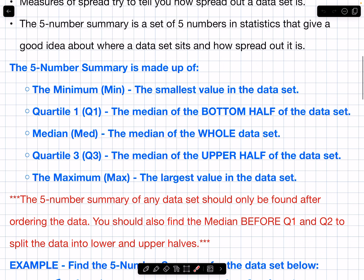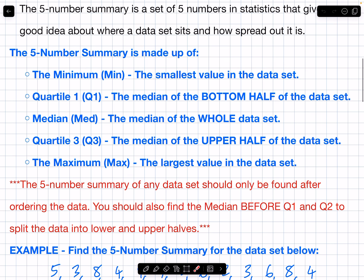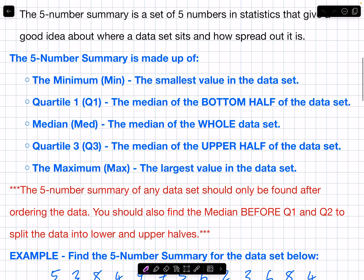Please note: the five number summary of any data set should only be found after you order the data first, because you need to find the median first. Finding the median splits the data into two halves — the bottom and the upper half — because the median is in the middle. Once you've split the data into two halves, then you can find Q1 and Q3. You need to find the median before Q1 and Q3 to split the data into lower and upper halves.